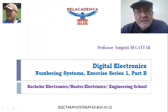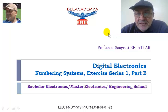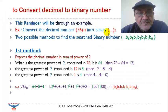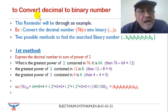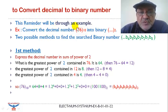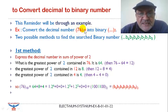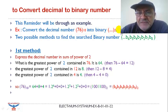Hello everyone and welcome to this video on digital electronics, course part B, exercise series 1: numbering systems. We have to show how to convert a decimal number to binary. As an example, we take 76, defined in base 10, and we search for its equivalent in base 2. There are two possible methods to find the binary result.